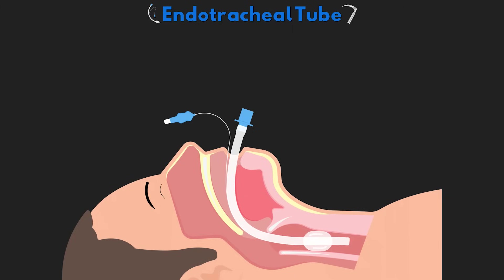Of the airway management devices, the quintessential piece of equipment that we often use in the ICU is the endotracheal tube. Many of our patients require a high level of respiratory support for a multitude of different reasons, and the endotracheal tube is the tool that most effectively allows us to do just that, which we will discuss in this lesson.